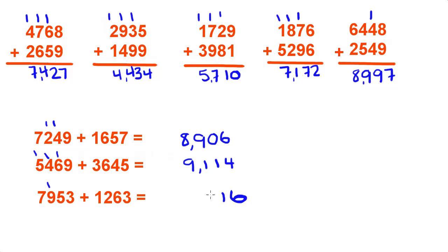9 and 2 is 11 plus 1 is 12. Carry over the 1. 7, 8, 9. And that's all we have for addition with whole numbers.